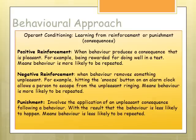Operant conditioning is learning from reinforcement or punishment — our consequences. Reinforcement means a behaviour will be more likely to be repeated; punishment will cause a behaviour to be less likely to be repeated. Positive reinforcement is when a behaviour produces a consequence that is pleasant for us. So if we do well on a test, we are rewarded and therefore more likely to repeat that behaviour — we realise we'll gain a reward if we do well.